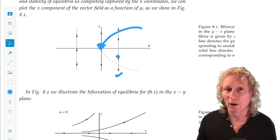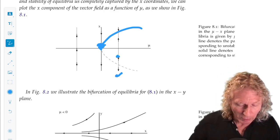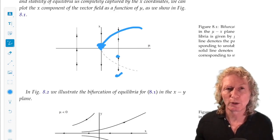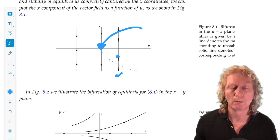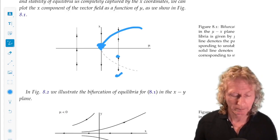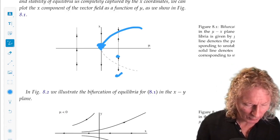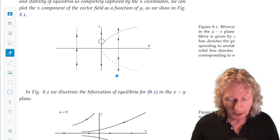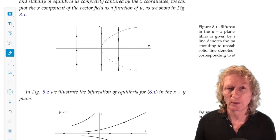We'll see what that means exactly. And then for mu less than zero, there are no stable equilibria. Whatever initial condition you pick, you run off to minus infinity. And you can verify that very easily from the one dimensional x component of the vector field.